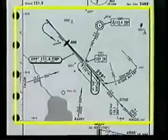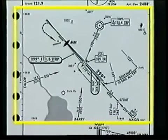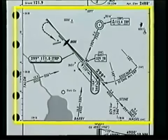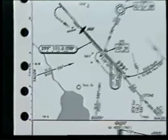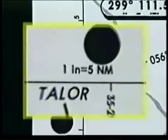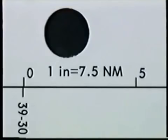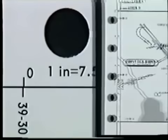The next section we'll look at is the plan view. To help you measure distance, a mileage scale is located along the left side of the chart. Normally, this scale is 1 inch equals 5 nautical miles. However, if the geographical area is large, the scale could be 7.5 nautical miles per inch.